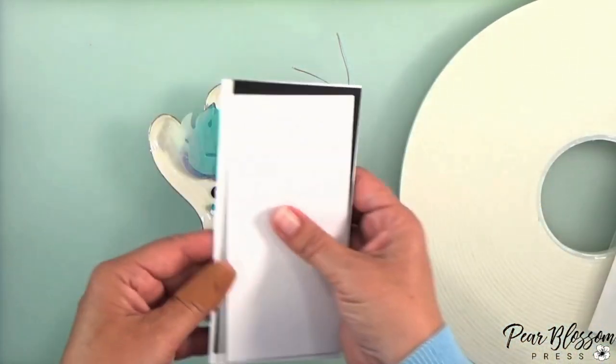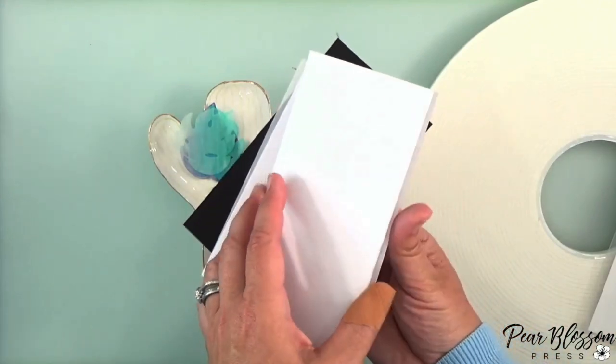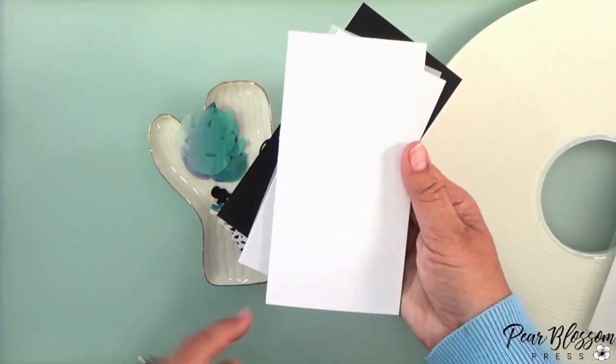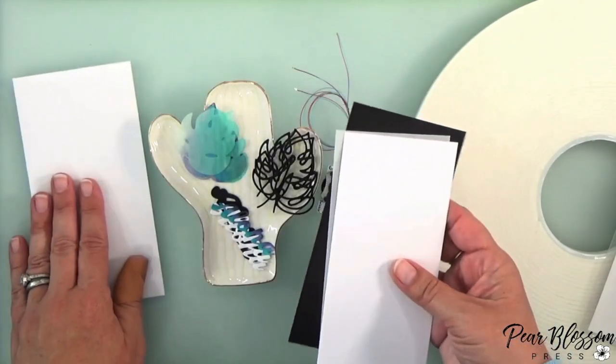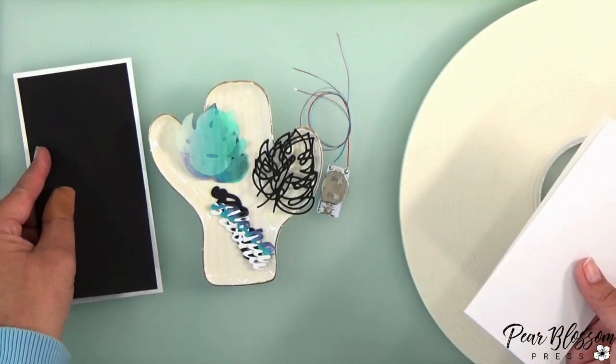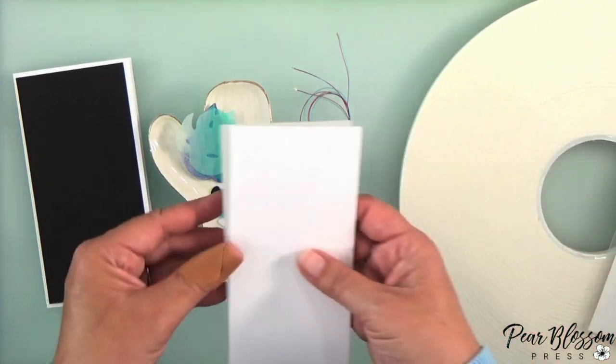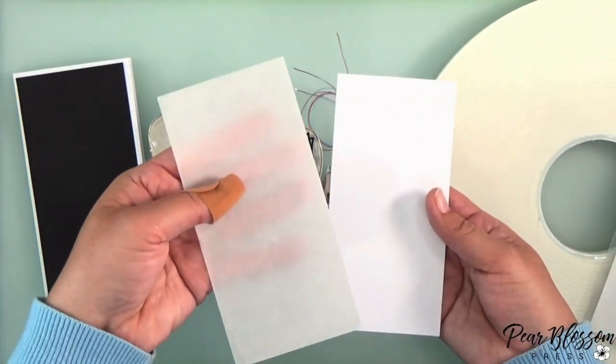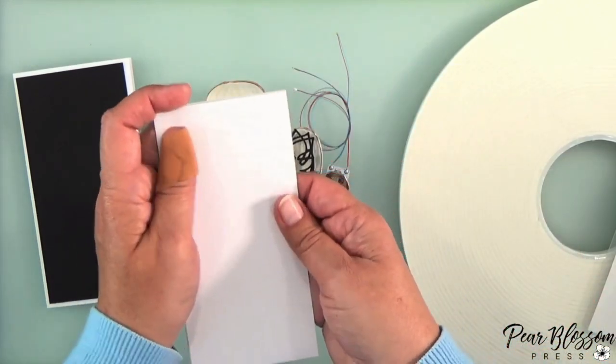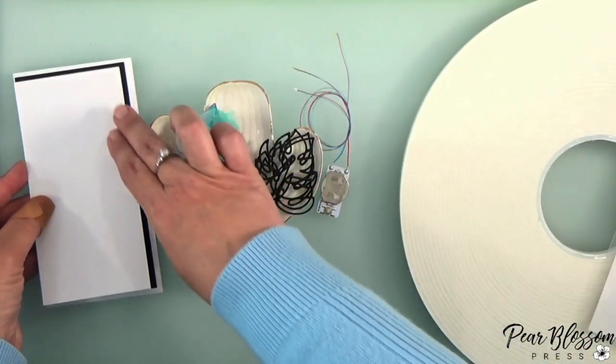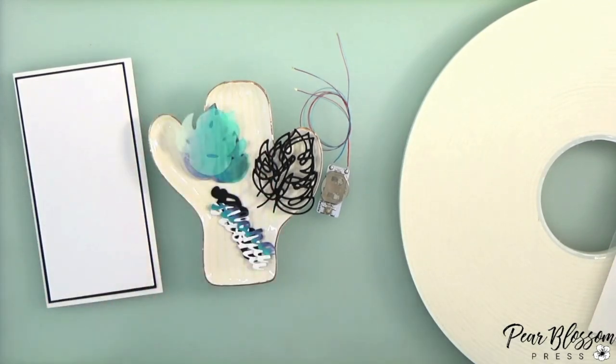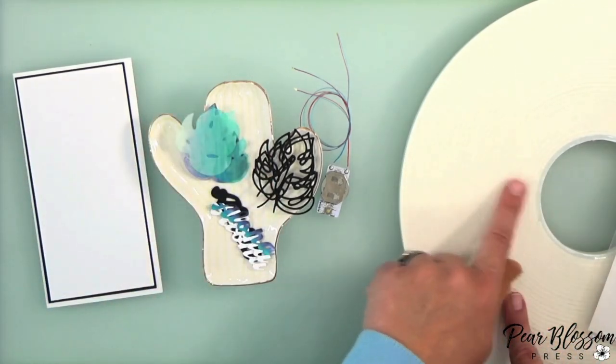Now the card I'm making is a mini slimline, so it's 3 and a quarter by 6 and a quarter. You can adjust it to A2 if you prefer or whatever size you want. You'll want to take a quarter inch off the top and the side for your black layer, and then I've got a layer of vellum and a white panel that is one eighth inch shorter and narrower than the black layer, just so that we have a nice little border there.